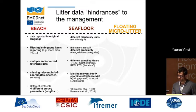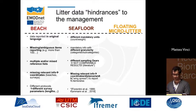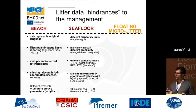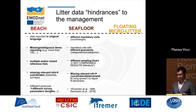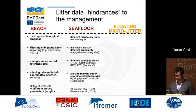For sea floor litter: different mandatory units of reporting such as count or weight, mandatory information with different granularity like categories versus subcategories, different sampling gears used — results from which are not comparable according to the literature — and missing relevant information like latitude, longitude, or survey width. For floating micro litter, up to now we did not find relevant hindrances.